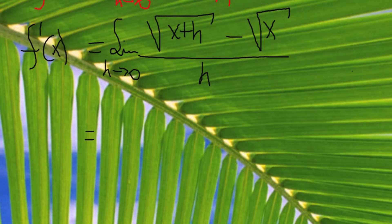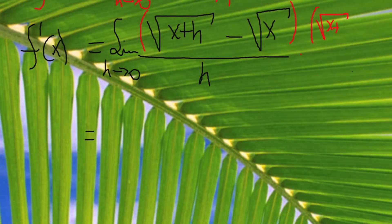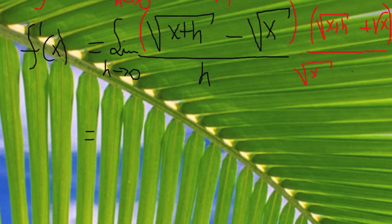So what we're going to do is multiply and divide by the conjugate. The conjugate for this function is square root of x plus h plus square root of x, and I will divide by that same quantity, square root of x plus h plus square root of x, which is the same as multiplying by 1.